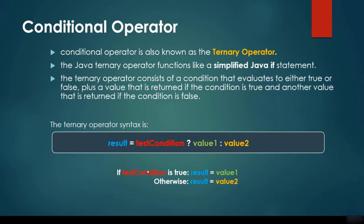If the condition is true, the result is value1; otherwise the result is value2. The test condition drives which of the two values is assigned to the result. We are going to look at concrete examples and it will become clear.